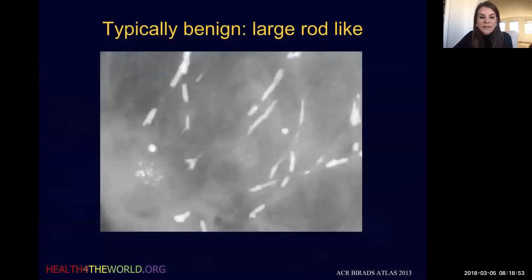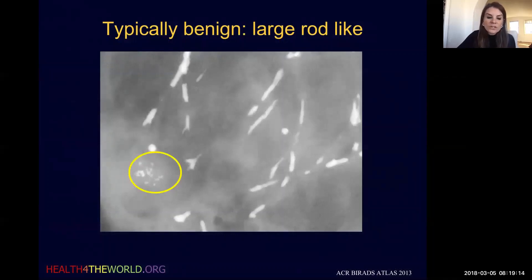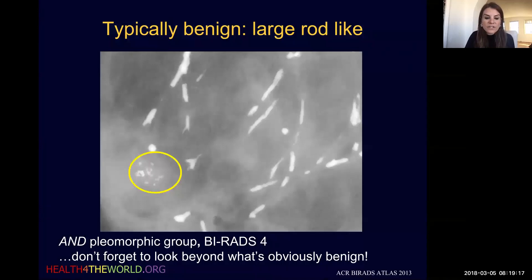Here's one more example of large rod-like calcifications, but I want to encourage you to take a close look. Within these benign large rod-like calcifications, we also see a group of fine pleomorphic calcifications — a suspicious morphology we'll review in an upcoming module. This is published in the BI-RADS manual as a nice example to always look beyond what's characteristically benign. Within this area of very benign calcifications, we also saw a suspicious group requiring biopsy. Don't get distracted by the characteristically benign; always look beyond them for anything that may be suspicious.